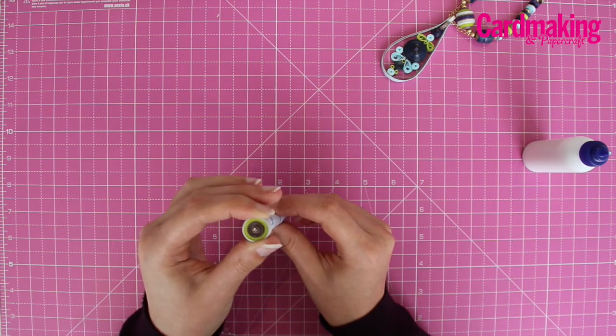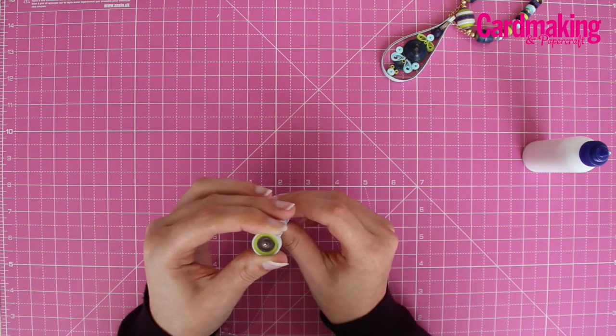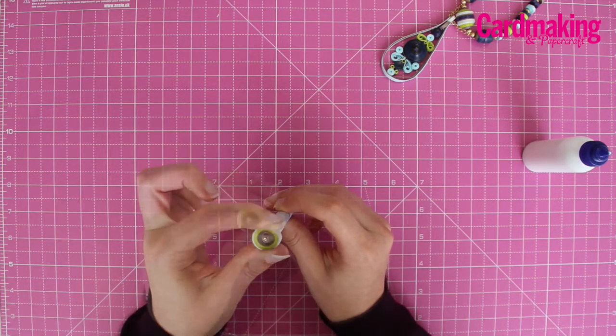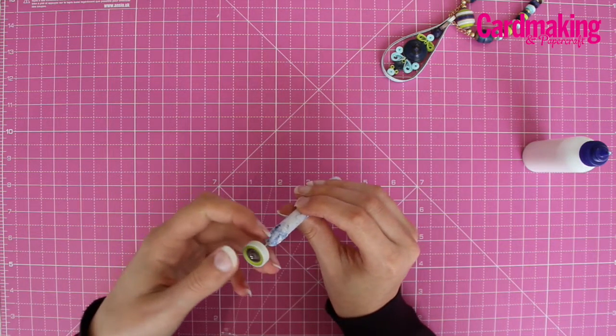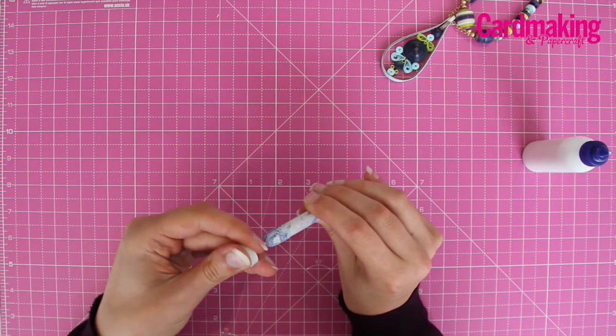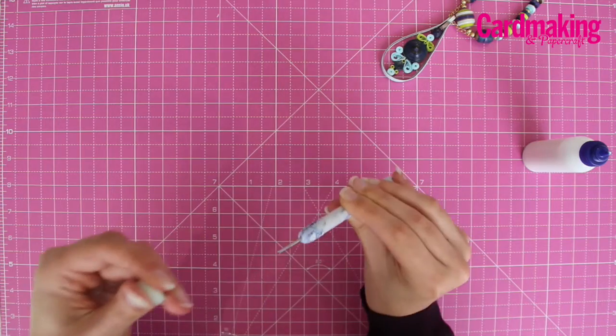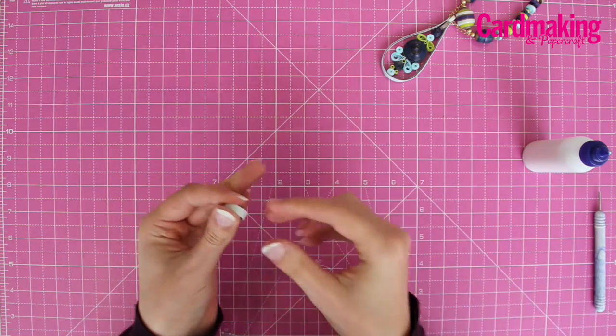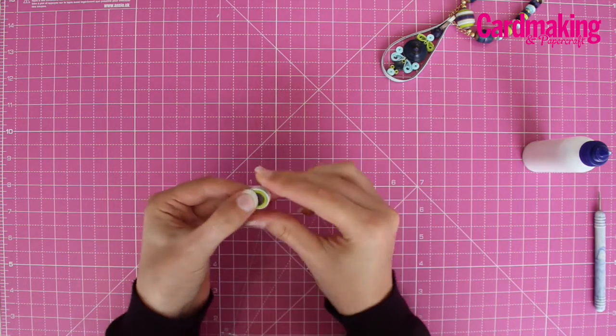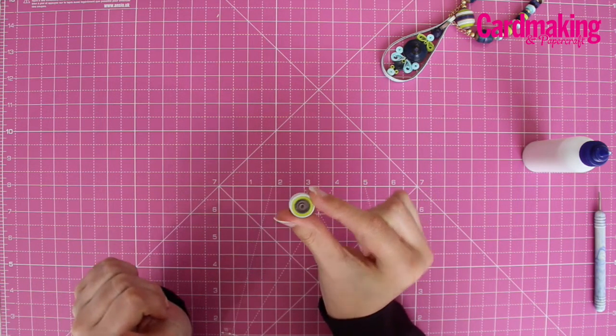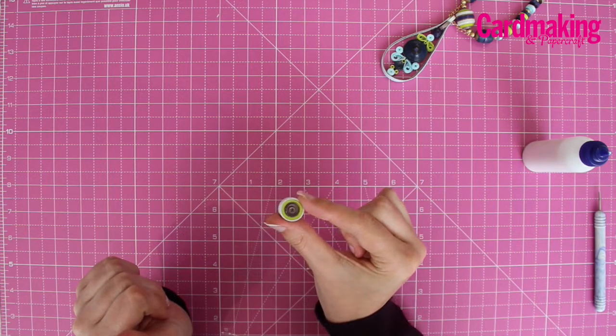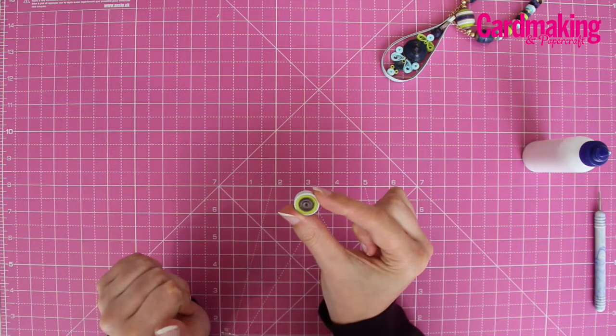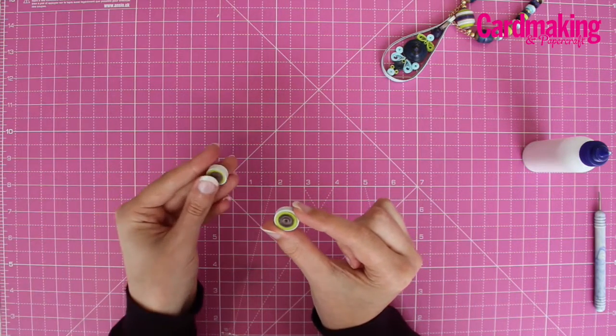Make sure that everything is dry before you continue to the next step. Once it's dry, remove it from the quilling tool. And there's your completed coil. Repeat that to create a second one.